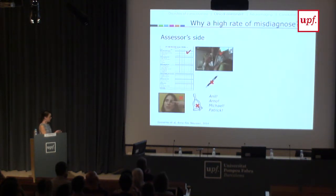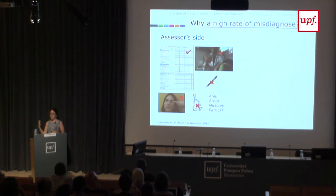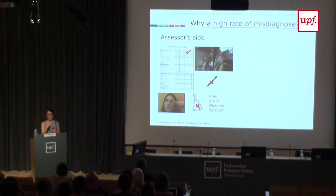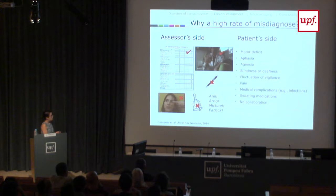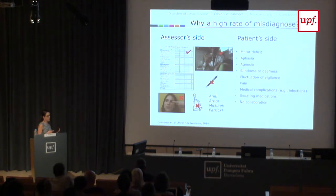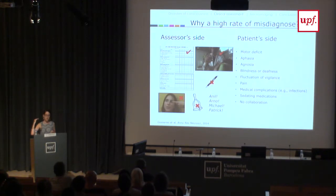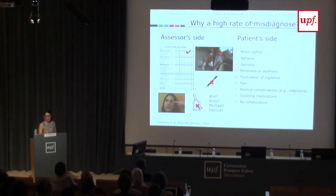The way you perform the Coma Recovery Scale is also really important. To assess visual pursuit, it's much better to use a mirror so the patient can see their own reflection. You should test auditory function by calling the patient by their own name, not just a random sound. We need to account for severe motor deficits, aphasia, blindness, and fluctuation of vigilance. We recently showed that you need at least five assessments within a two-week period to make sure you didn't miss any sign of consciousness.